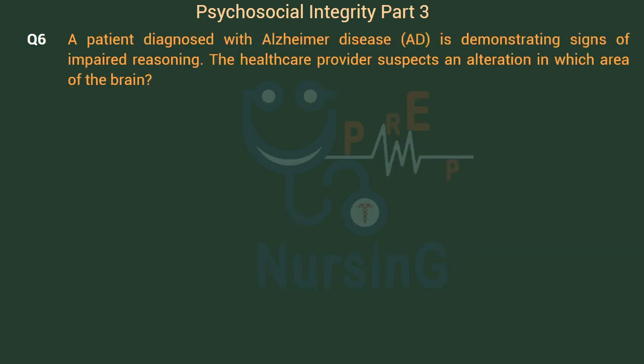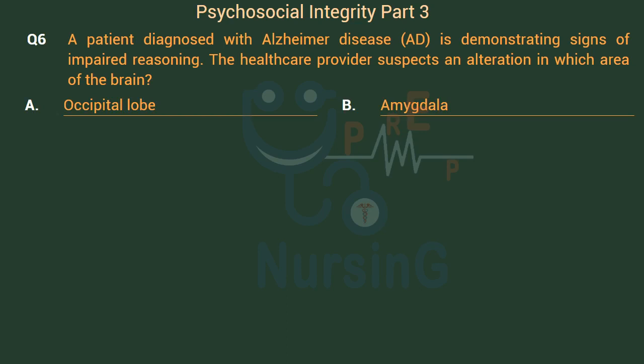A patient diagnosed with Alzheimer's disease (AD) is demonstrating signs of impaired reasoning. The healthcare provider suspects an alteration in which area of the brain? Option A: Occipital lobe. Option B: Amygdala. Option C: Frontal lobe. Option D: Hippocampus.